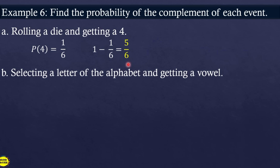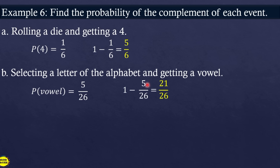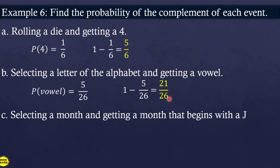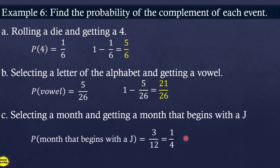Selecting a month and getting a month that begins with J. The months starting with J are January, June, and July — that is 3 out of 12 months, which simplifies to 1/4. Since we need the complement, that is 1 minus 1/4 = 3/4.